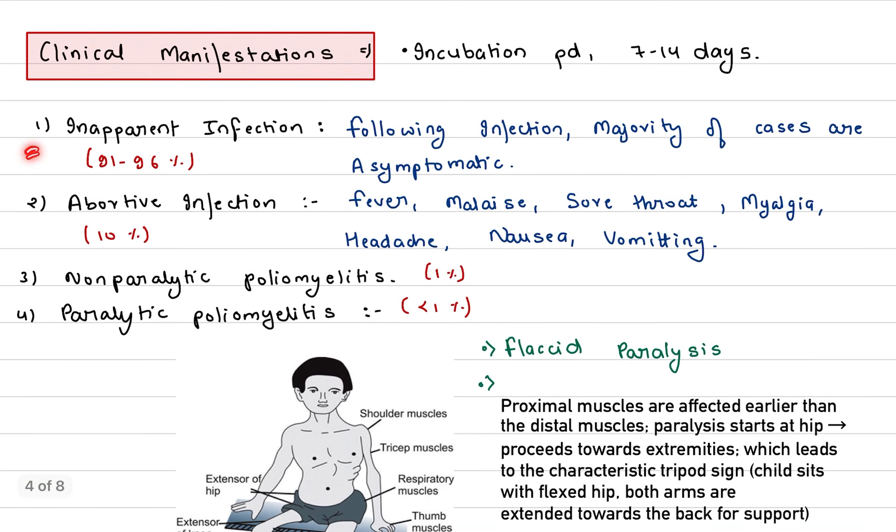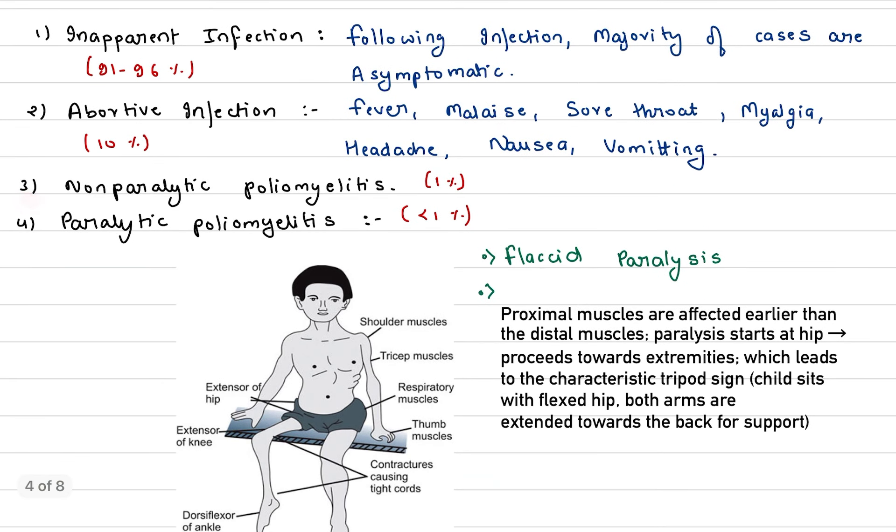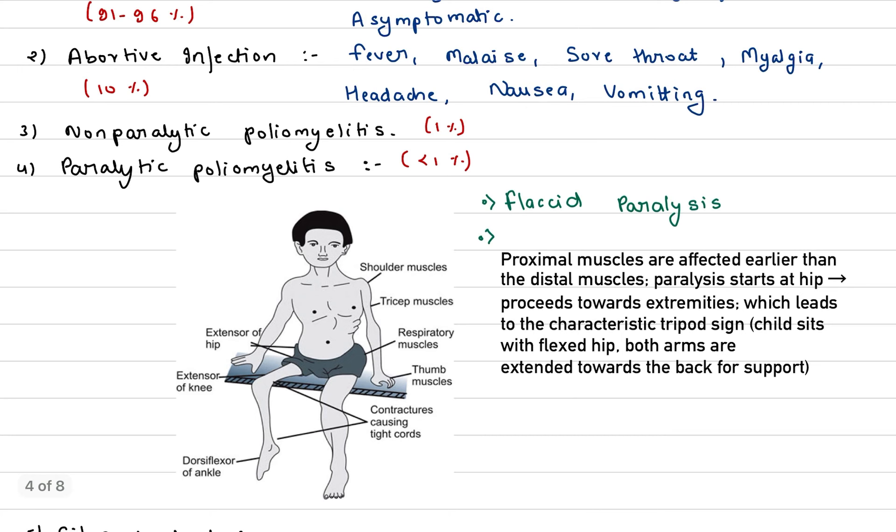Incubation period is 7 to 14 days. Inapparent infection, which is 91 to 96% of cases, following infection, majority of cases are asymptomatic. Abortive infection is seen in 10% of cases in which we see fever, malaise, sore throat, myalgia, headache, nausea, vomiting.